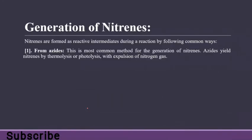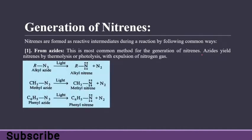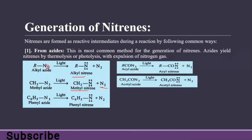The methods of generation of nitrines: the most common method is generation from azides. Azides yield nitrines by thermolysis or photolysis with expulsion of nitrogen gas N2. If we have an alkyl azide with three nitrogen atoms, with expulsion of N2 by photolysis or thermolysis, we get alkyl nitrine. Similarly, from methyl azide, removing N2 gives our nitrine molecule.